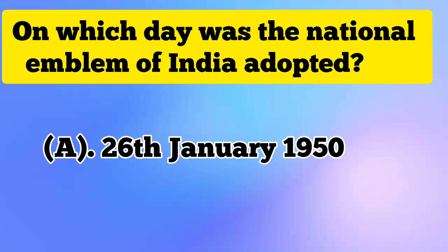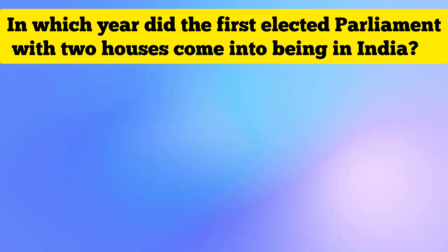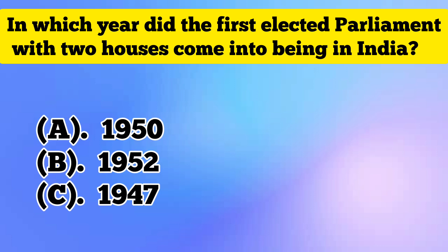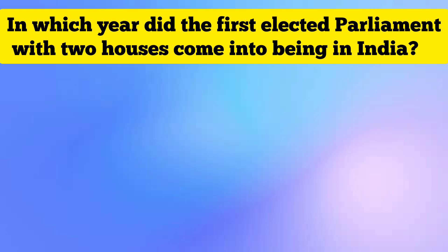Answer: 26 January 1950. In which year did the first elected parliament with two houses come into being in India? Answer: 1952.